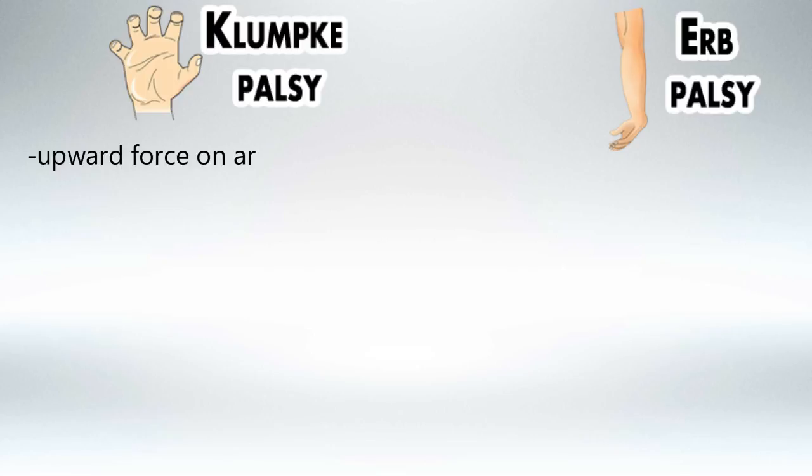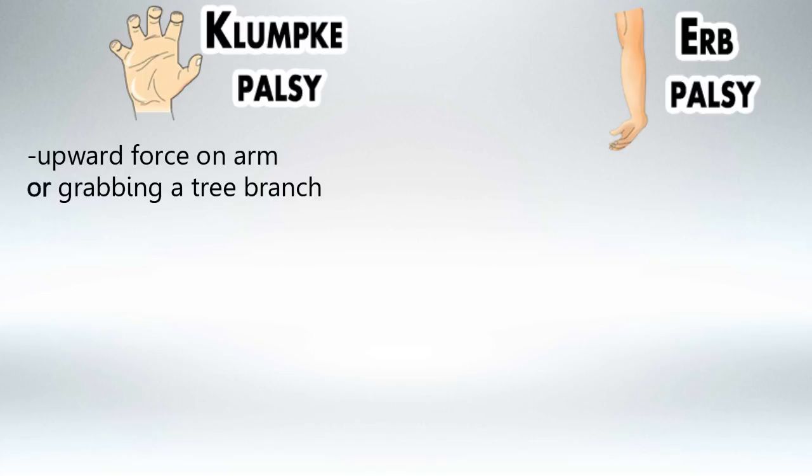Klumpke Palsy is caused by two main reasons, and they are upward force on the arm. Just imagine somebody shrugging their shoulders very strongly or excessively. It usually happens in kids during labor when the doctor is pulling out the baby and they shrug their shoulders excessively, causing Klumpke Palsy. It is also caused by grabbing a tree branch while falling, which is a very classic scenario for Klumpke Palsy.